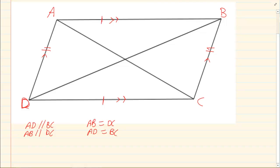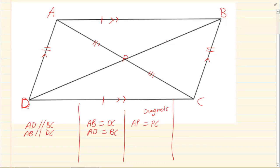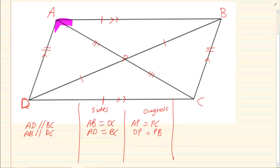The third property is that the diagonals bisect each other. So AP equals PC, and DP equals PB. Remember, we have the sides that are equal, and now we have the diagonals that bisect each other. Then we have that the opposite angles are equal — that means angle A equals angle C, and angle B equals angle D.